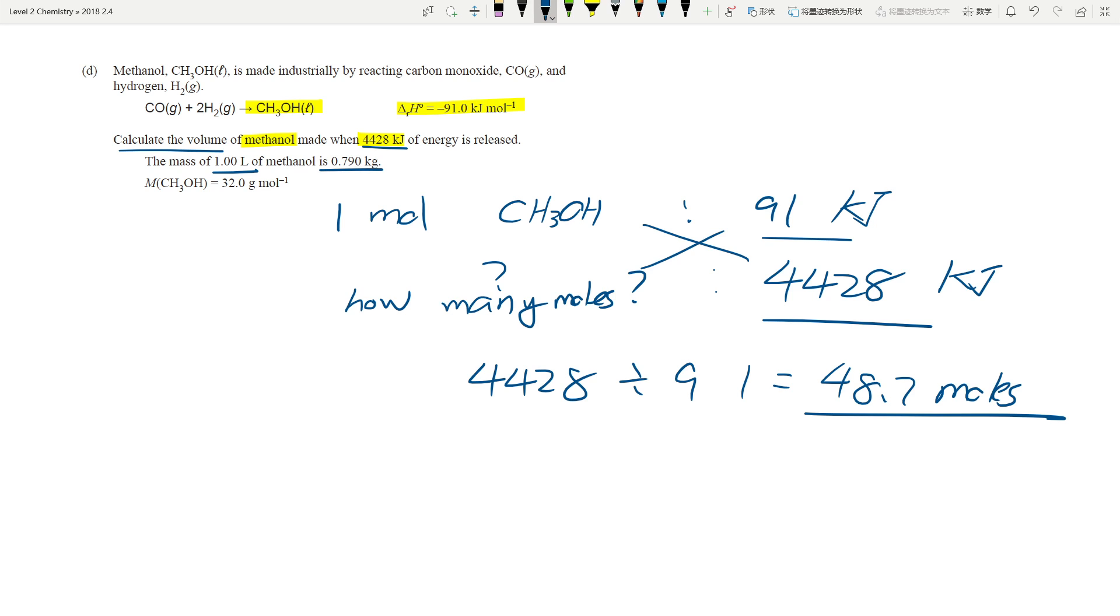And this is how many moles I have. What is the mass? One liter is 0.79 kilograms. So let's use the molar mass number first. I know the mole, I know the molar mass. I can figure out the small m. So let's rearrange this. Small m equals N times big M. So that's 48.7 times 32 grams per mole. That is going to give us 1557 grams. I need to know how many liters it is because they gave me the volume. So one liter is 0.79 kilograms. I have 1557 grams, which is 1.557 kilograms. How many liters is that?